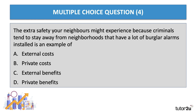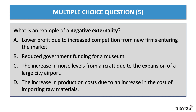Question four: the extra safety your neighbours might experience because criminals tend to stay away from neighbourhoods that have a lot of alarm systems installed — what is that an example of? The answer is C — an external benefit. That would be an external benefit from somebody's consumption. Should you pay for living in an area with good security?